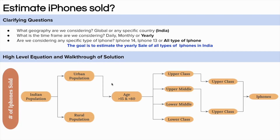Indian population is around 1.4 billion. Let's assume that 30% of the population belongs to urban areas and 70% belongs to rural areas. This gives us around 400 million people in urban areas and 1,000 million people in rural areas.